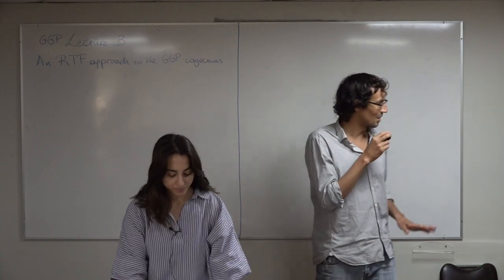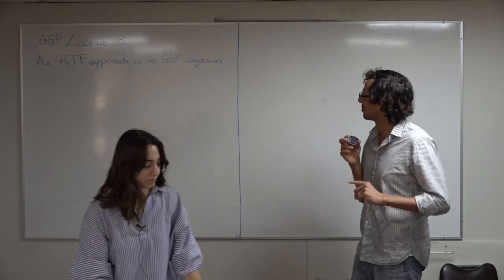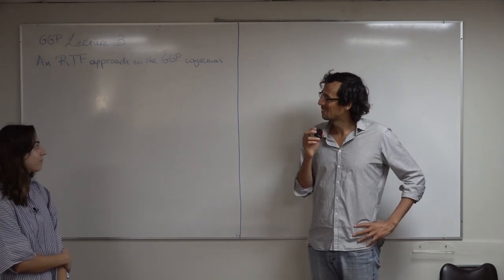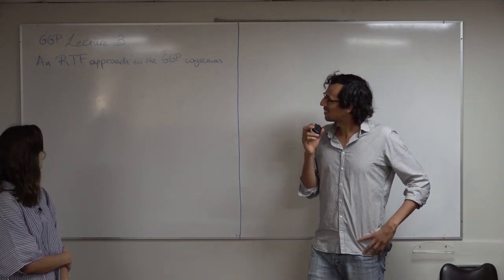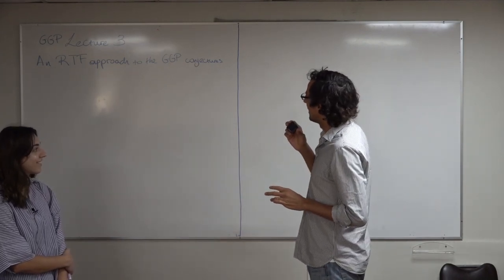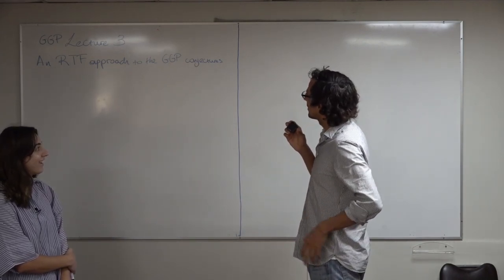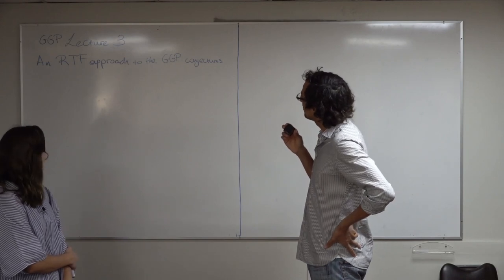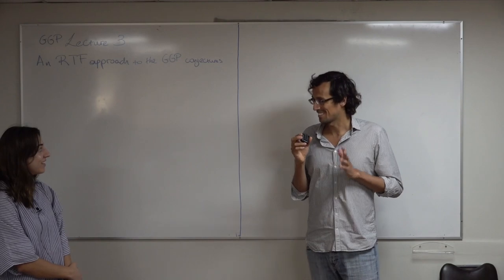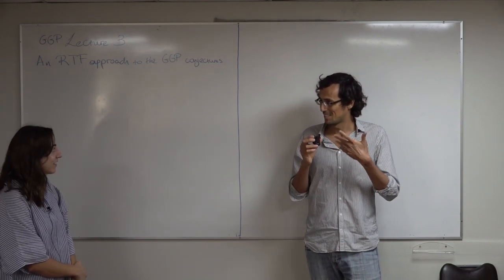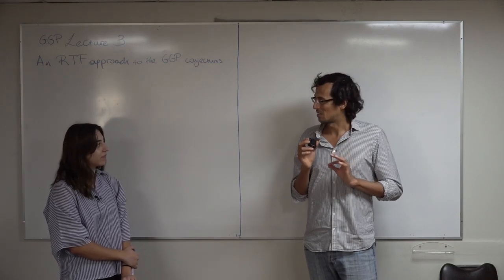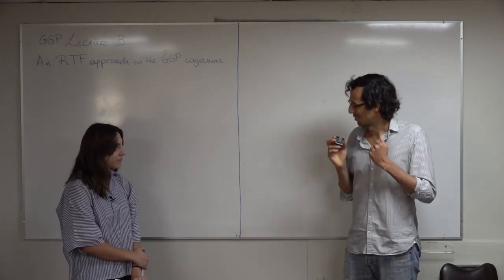We will start our last lecture of the mini-course about DGP conjectures. Today the talk is about the RTF approach to the DGP conjecture. Xenia will give some ideas on how to prove some cases of the conjecture in the unitary case.